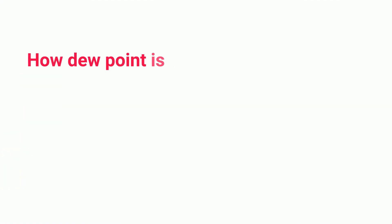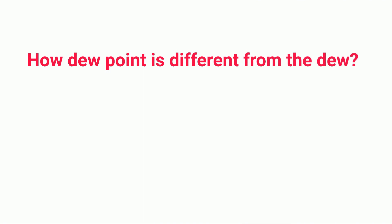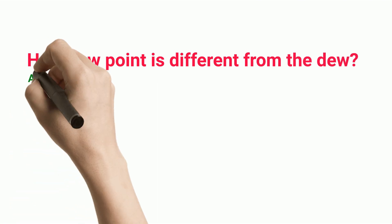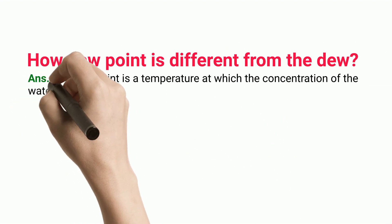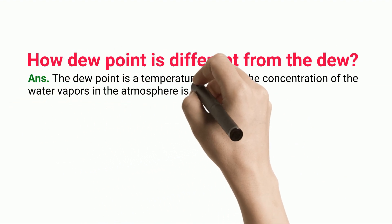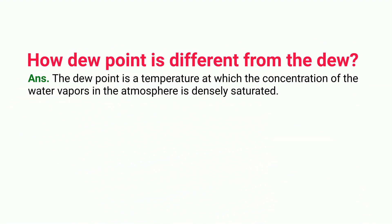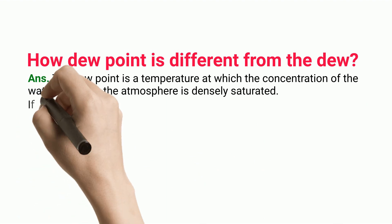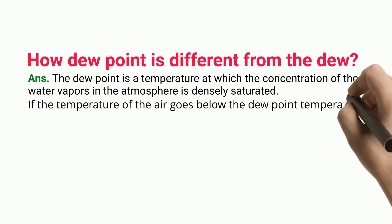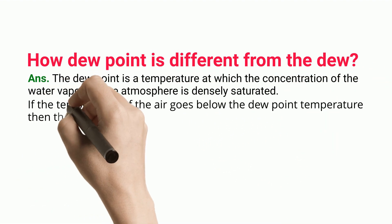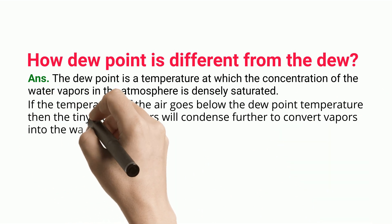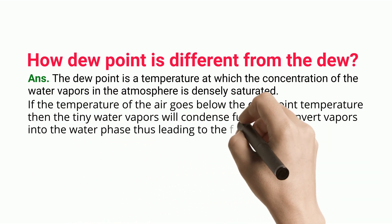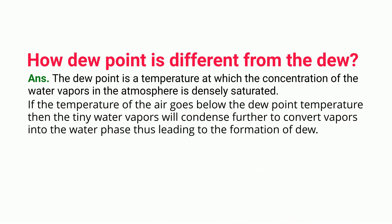Frequently asked question: How is the dew point different from dew? The dew point is the temperature at which the concentration of water vapors in the atmosphere is densely saturated. If the temperature of the air goes below the dew point temperature, the tiny water vapors will condense further, converting vapors into the water phase, thus leading to the formation of dew.